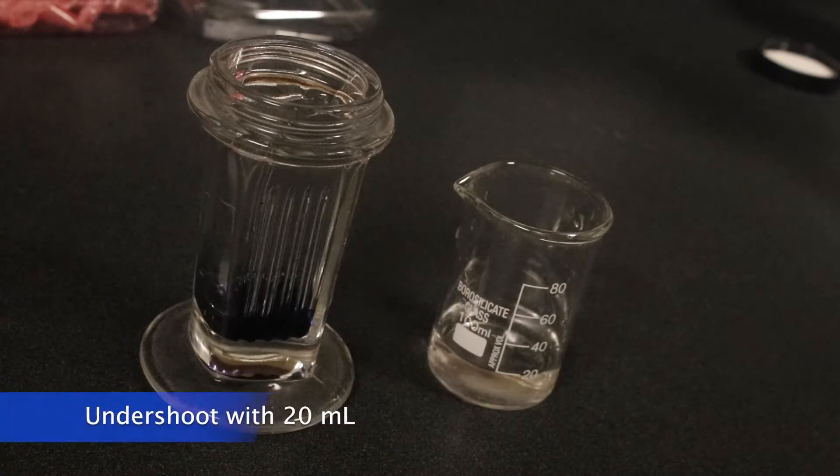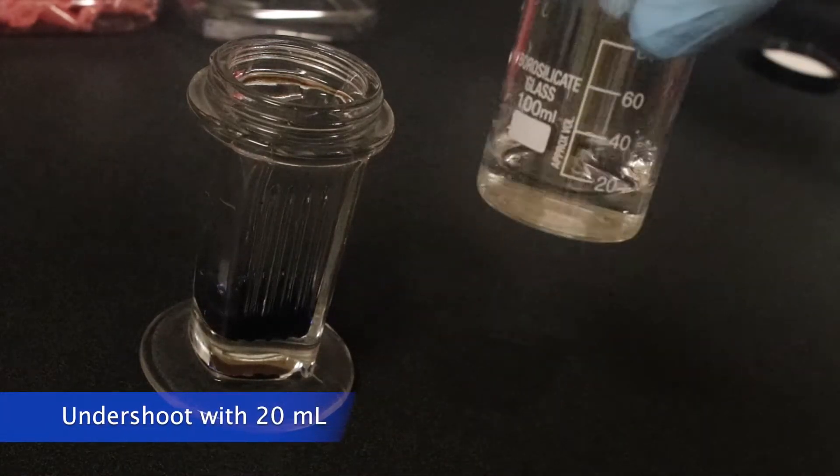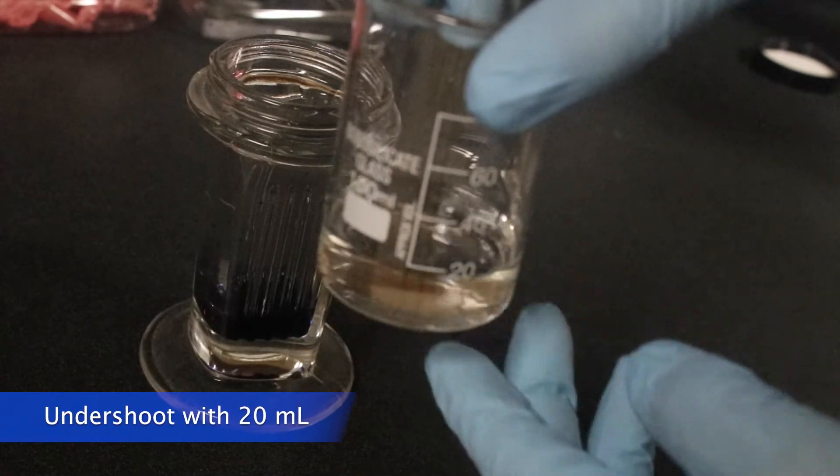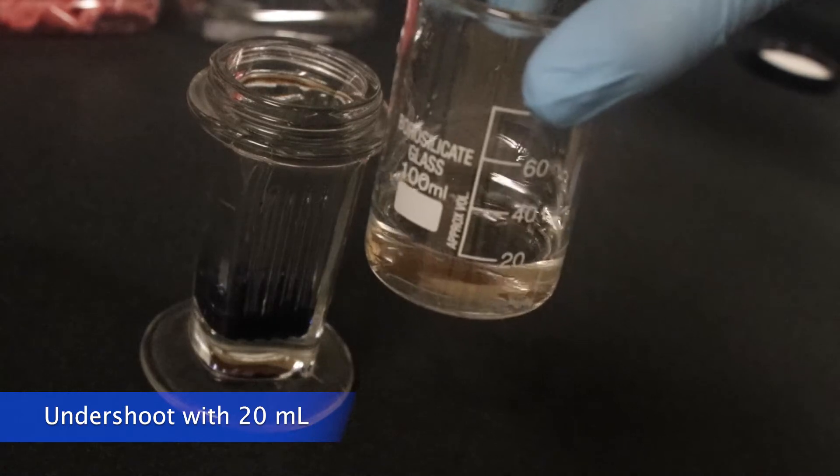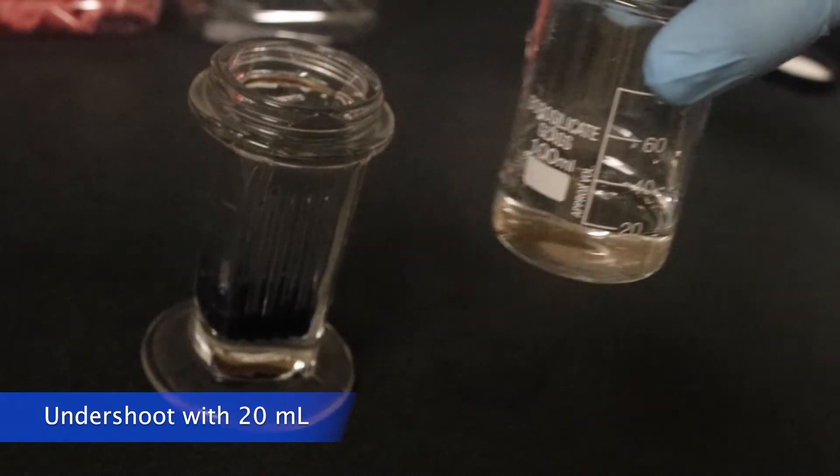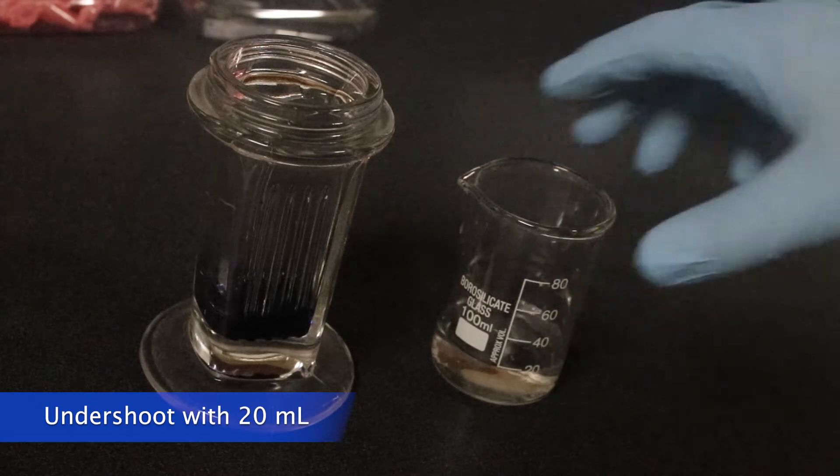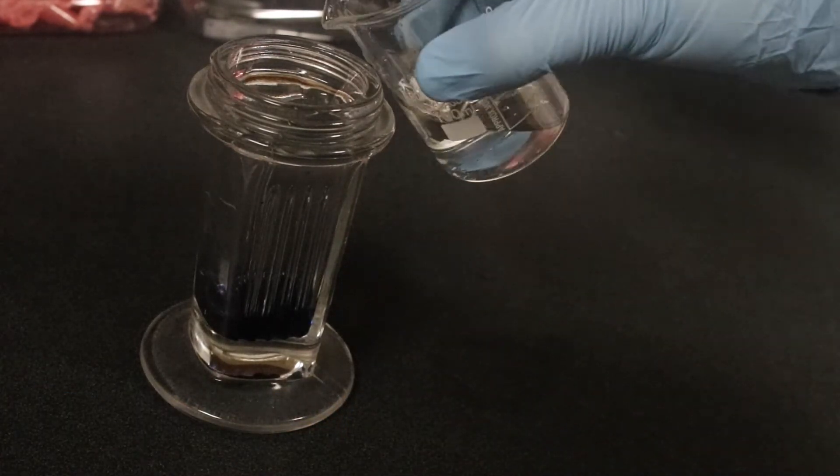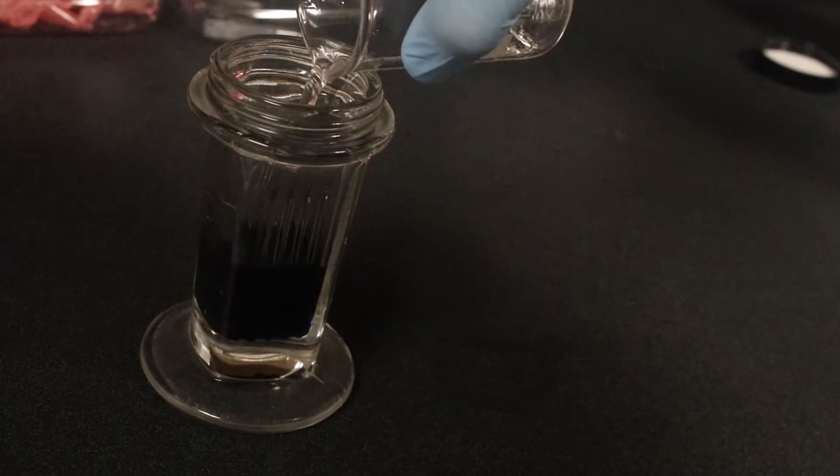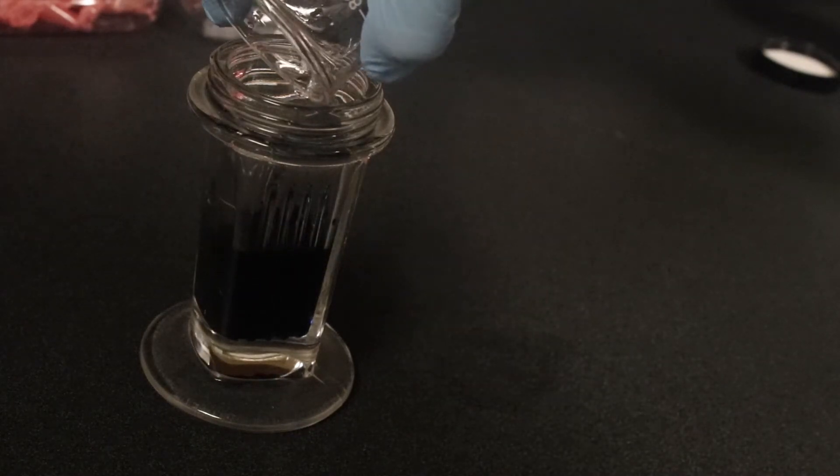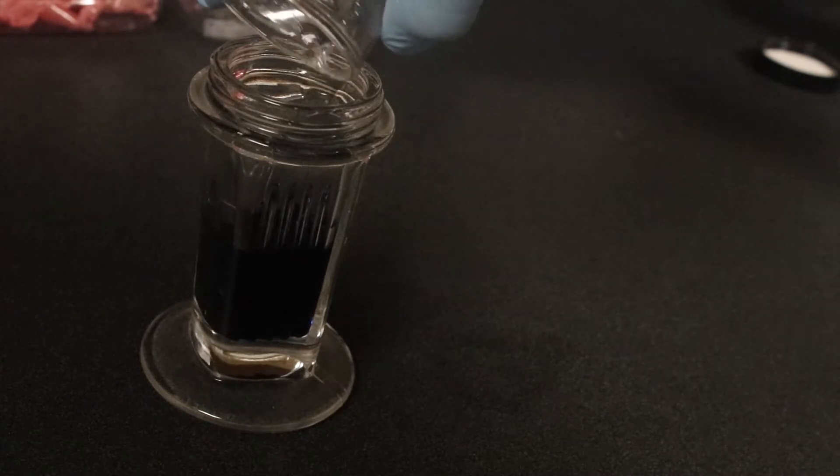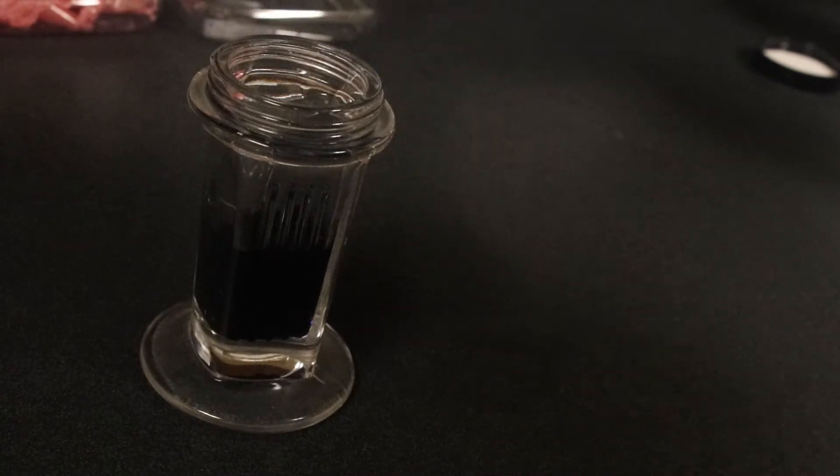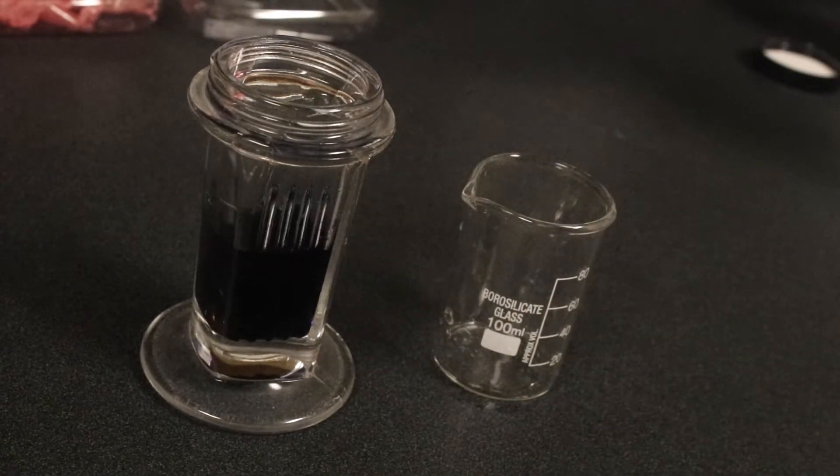Now, it's better here to undershoot the volume, because you can always just add more buffer in later once you put the slides into the Coplin jar. And this is important because the slides are going to displace water, so if you put too much, then you're going to get stain on where the numbers go on the slide, and you don't want that. So, I put 20 milliliters here, and then in the next step, I'm going to add five more milliliters after I put the slides in, just to be safe.